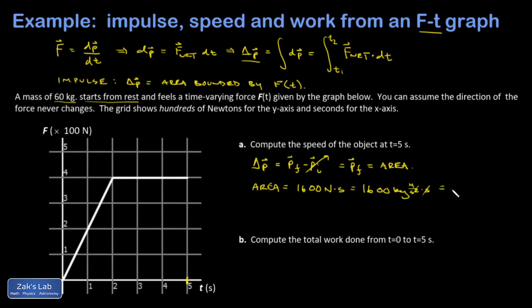And that's going to be equal to p final, which is the mass of the object, 60 kilograms, times the final velocity. So I end up with a final velocity of 1600 divided by 60, or 26.7 meters per second pointing to the right.